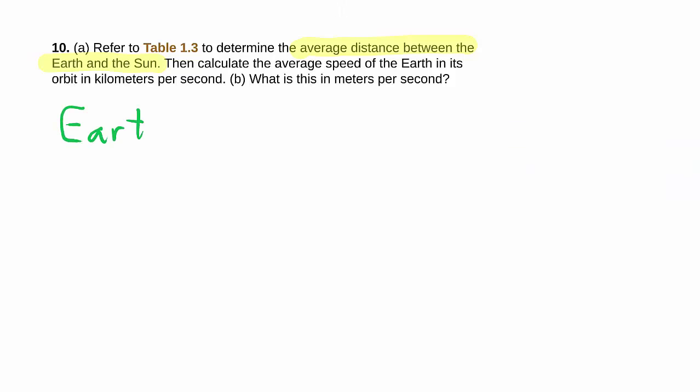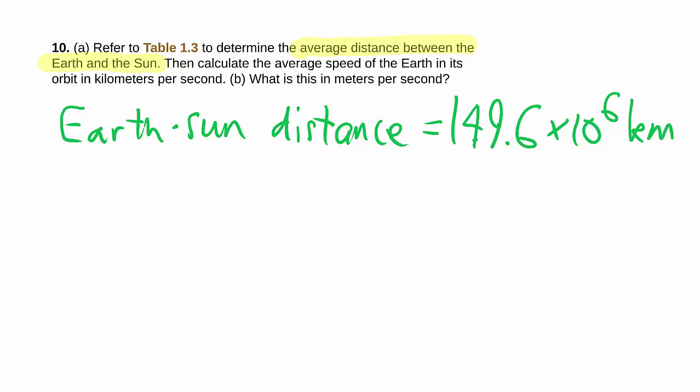So the Earth to Sun distance is equal to 149.6 million, which is 10 to the 6 kilometers, which by the way is 149.6 times 10 to the 9 meters, because a kilo is another factor of 3. As you move the decimal places a couple back, you'll find that it actually agrees with our table in the textbook, it's 10 to the 11th meters.